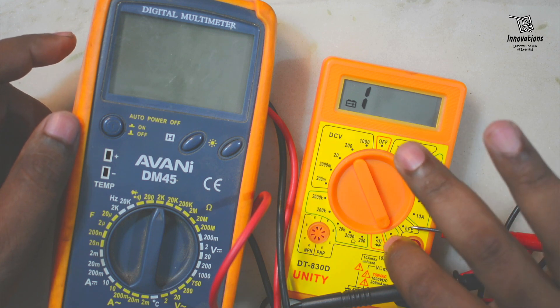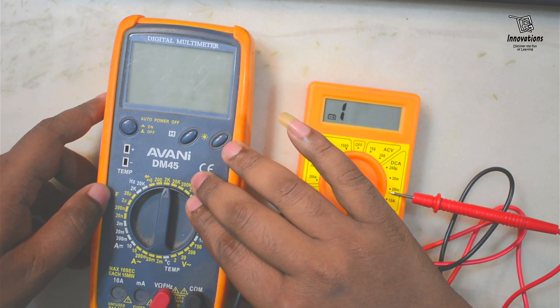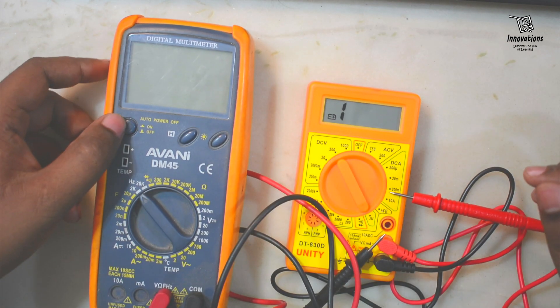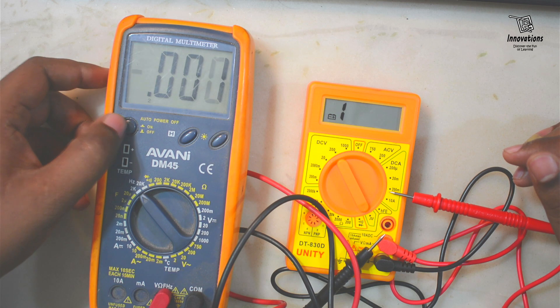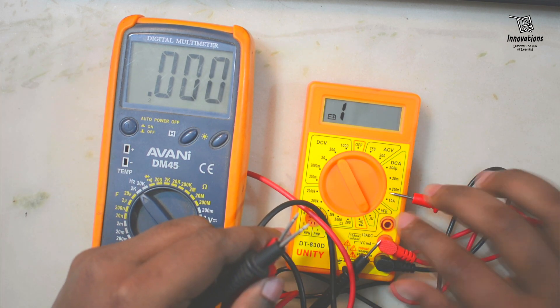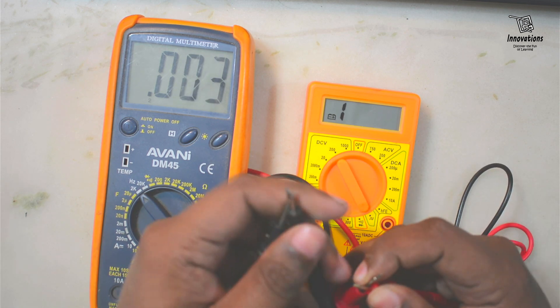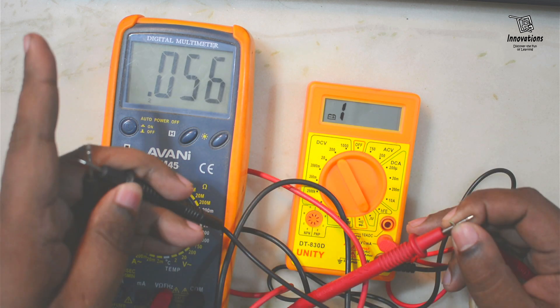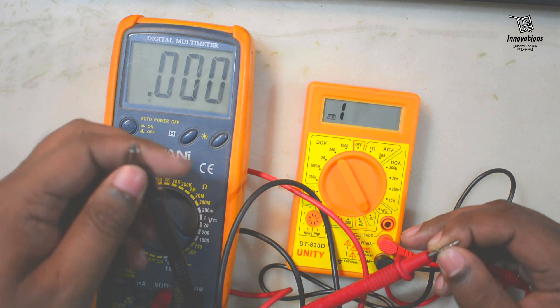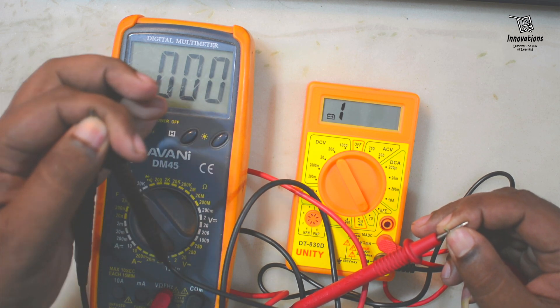So how should we know that this generates a frequency? In this multimeter of mine, it has a feature to measure frequency. So I will set it to 2k, that means 2000 hertz, and turn on the multimeter. Now this multimeter is set to square wave generator. And I will connect the red probe with the red probe and black probe with the black probe. So it shows it is generating a frequency of 56 hertz.